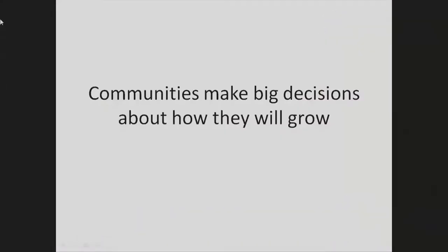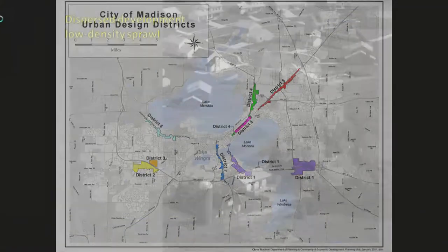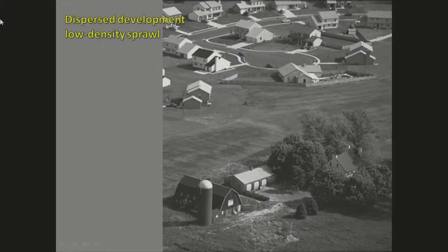Every community makes decisions about how it should grow, where development will occur, and on what terms. Many people aren't aware that these decisions are sometimes on autopilot — rules put in place a very long time ago that people treat as laws of nature. The reason development happens the way it does is because we set zoning regulations, put in place tax policies, and make decisions about where we're investing in infrastructure.